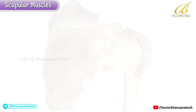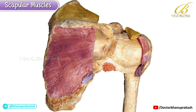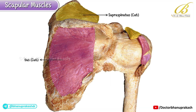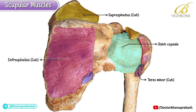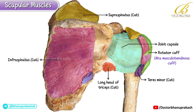In this dorsal view, the scapular muscles have been dissected and partially removed to expose the fibrous capsule of the shoulder joint. The dissected muscles include the supraspinatus, infraspinatus, and teres minor, all of which contribute to the posterior part of the shoulder joint capsule. Along the lateral aspect, the flattened cut ends of these muscles blend with the capsule to form the rotator cuff. Just below the capsule, you can observe the cut part of the long head of the triceps brachii. With this, we conclude the demonstration of the scapular muscles.